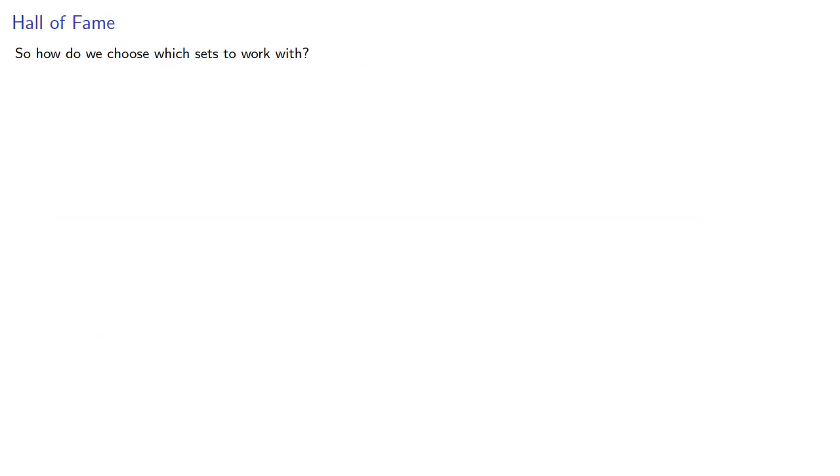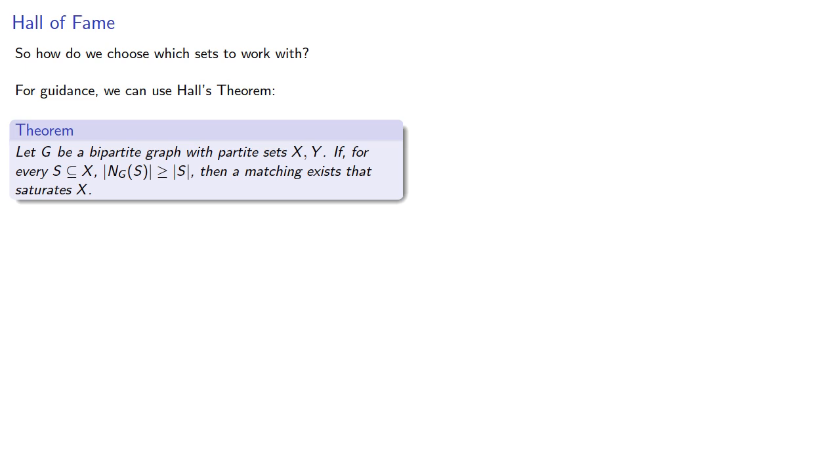So how do we choose which sets to work with? For guidance, we can use Hall's theorem. Let G be a bipartite graph with partite sets X and Y. If for every subset S of X, the neighbors of S have greater cardinality than S itself, then a matching exists that saturates X.